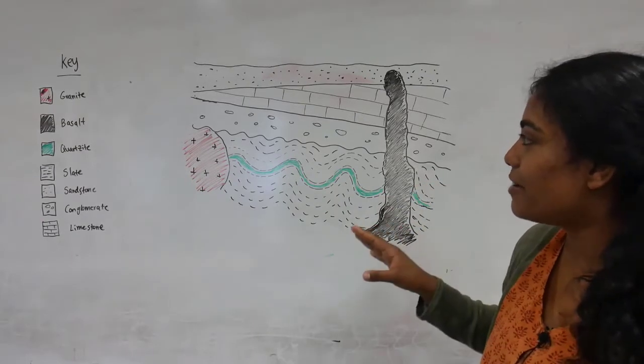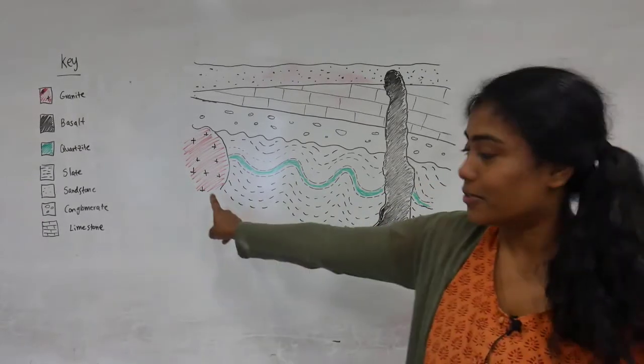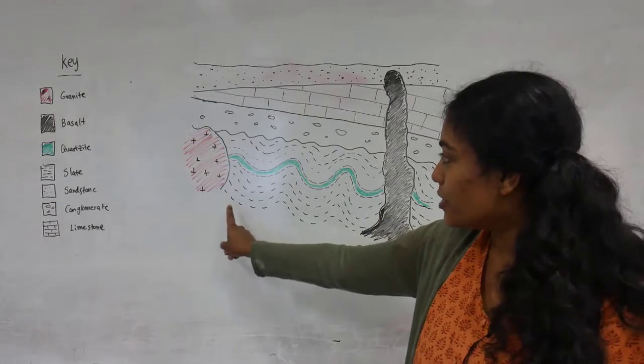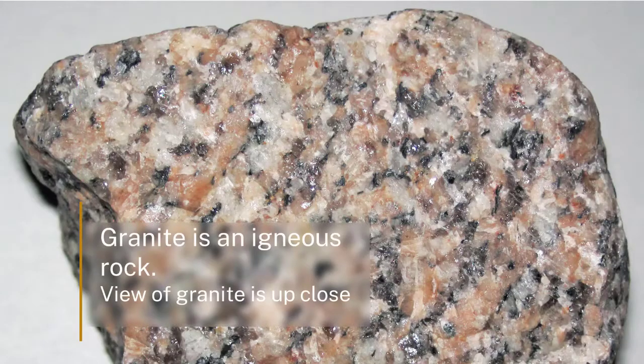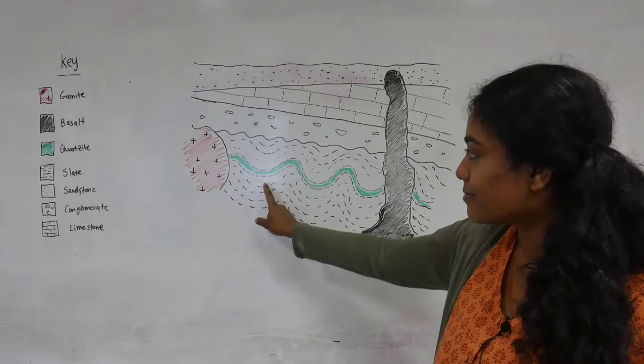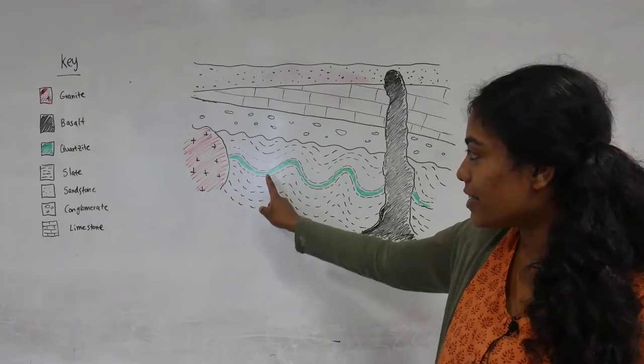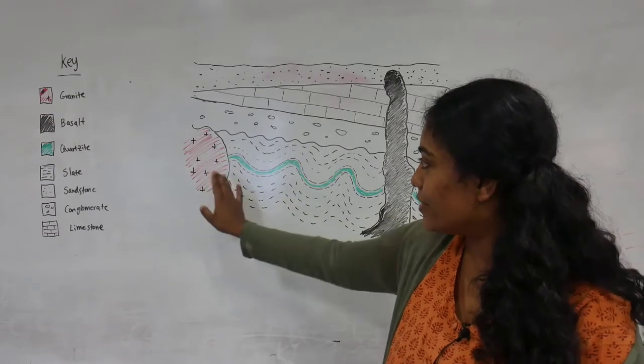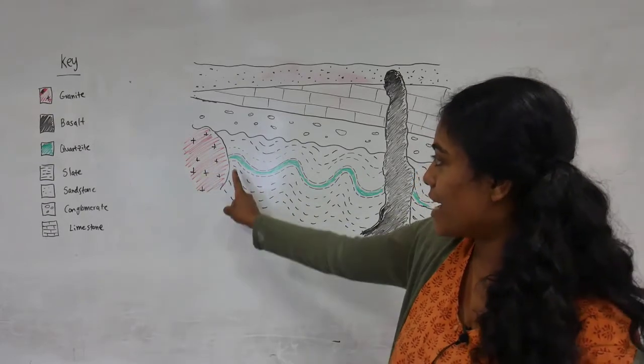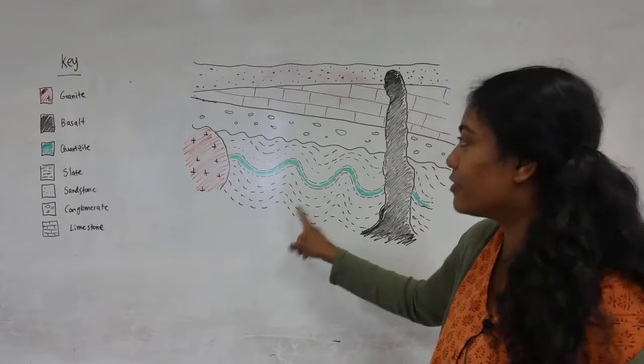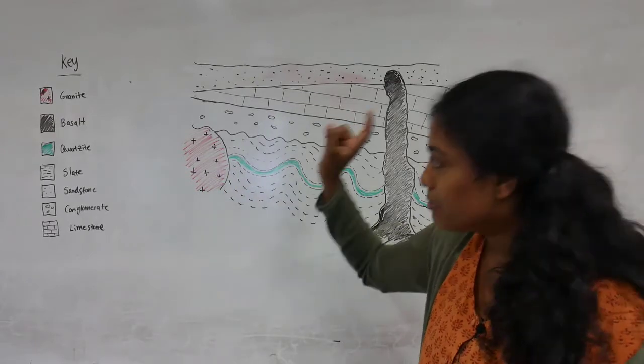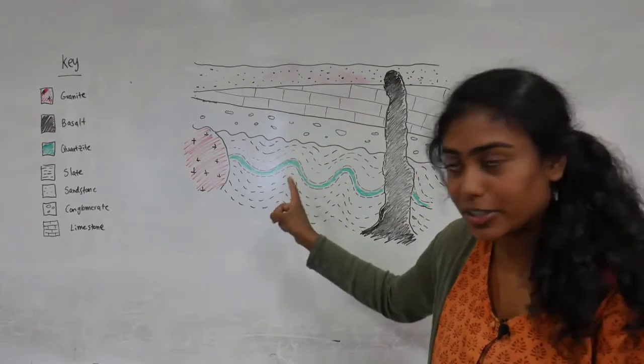Then after that we had this granite body which intruded into these metamorphosed slates and quartzites. And so this granite doesn't have the same folded fabric as these rocks. So we know that it must be younger than what it's intruding into.